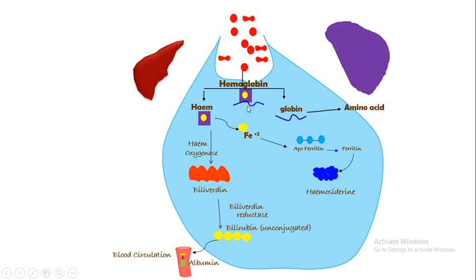After hemolysis of the red cells, hemoglobin is released. Hemoglobin breaks down into heme and the globin part. This globin part is further converted into amino acids and utilized for protein synthesis.